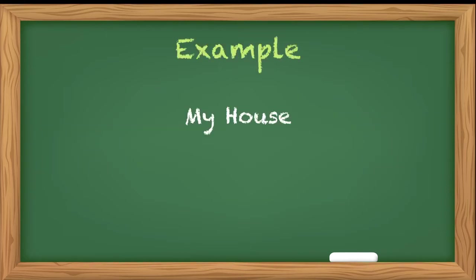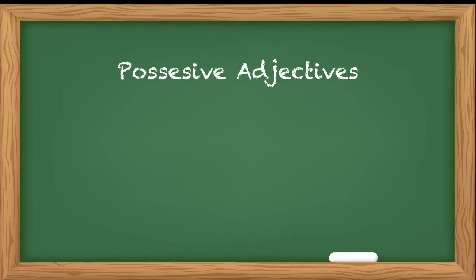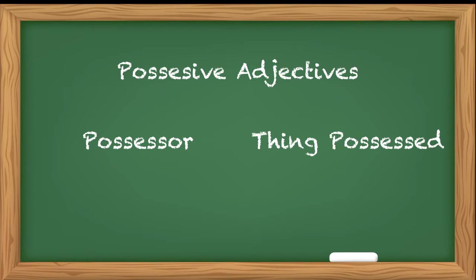For example, 'my house.' Here, 'my' is a possessive adjective. Why? Because it is telling whose house it is. So it's an adjective and it also shows possession. When we talk about possessive adjectives, there are two elements to be considered: one is the possessor, and second is the thing possessed. The possessor is the one who possesses the thing.